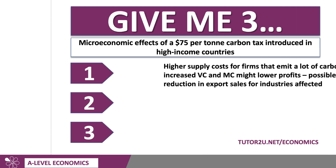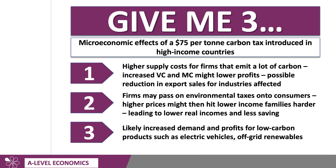Here are three points. First of all, if you impose a tax that wasn't there before, that's going to increase the supply costs for businesses that are heavy carbon emitters. Think about coal and other heavy industries — things like cement and incinerator plants that create a lot of carbon emissions. That's going to increase their variable costs and their marginal costs. Can you visualise a diagram you could draw to make that point? And that might lower profits, depending on the extent to which they're able to pass on those costs in the form of higher prices.